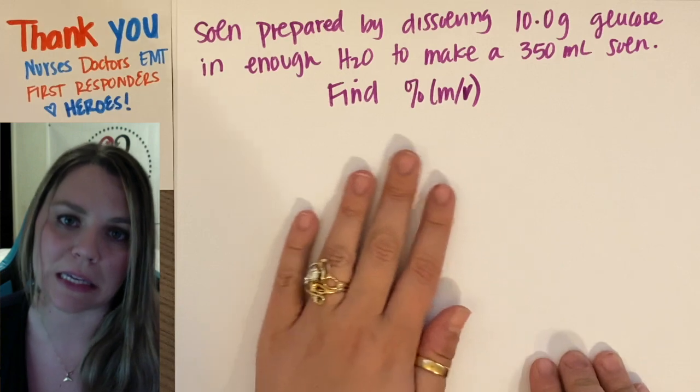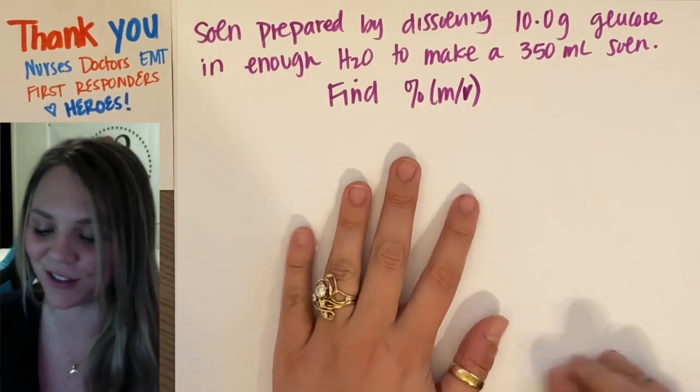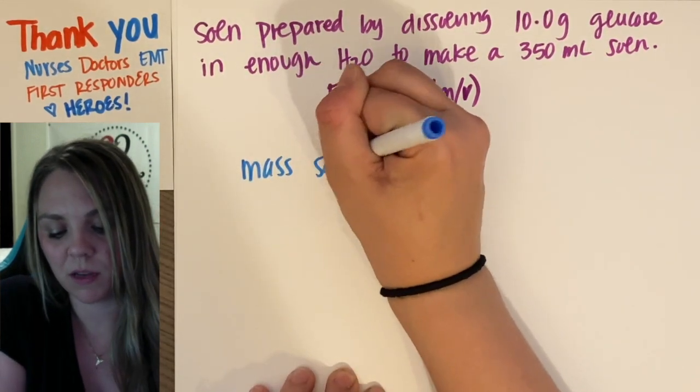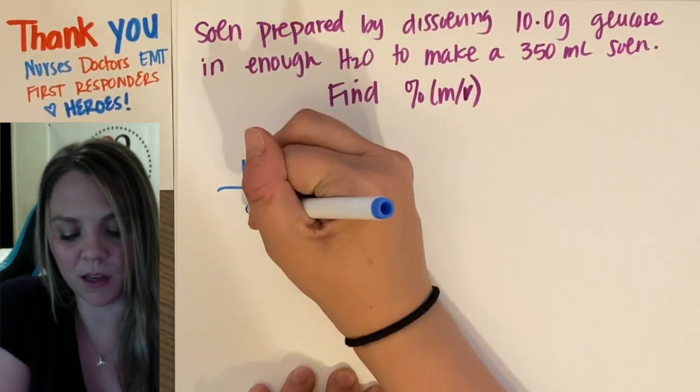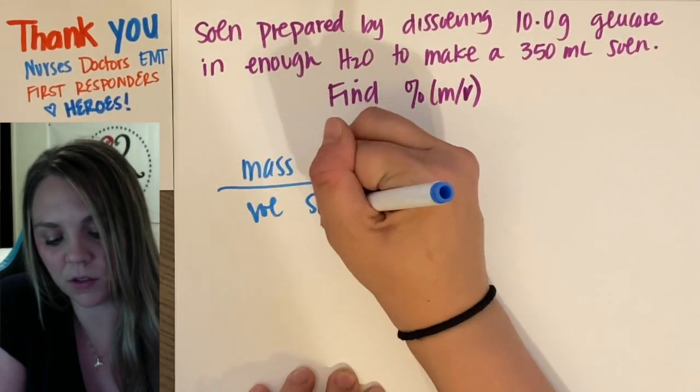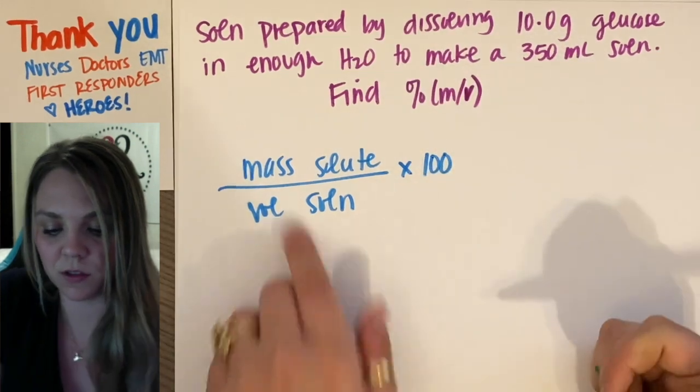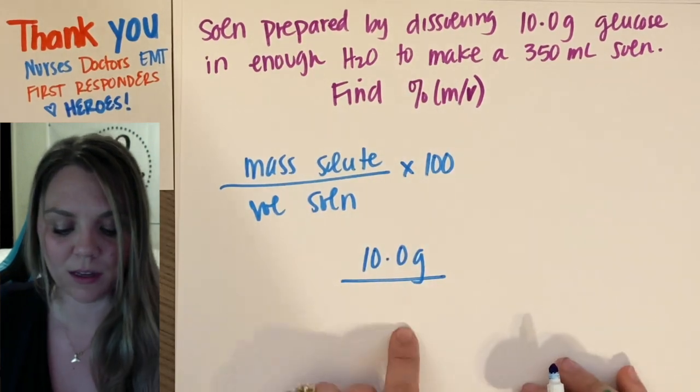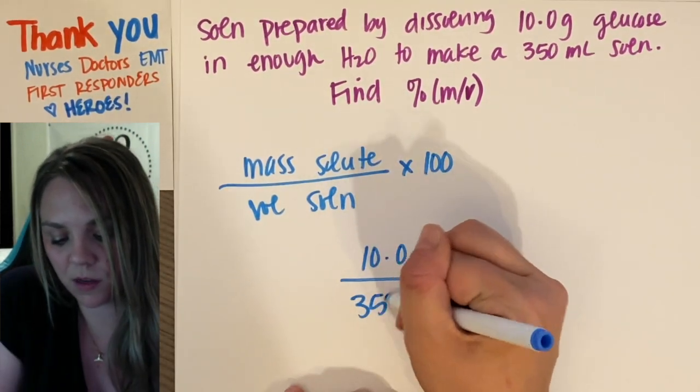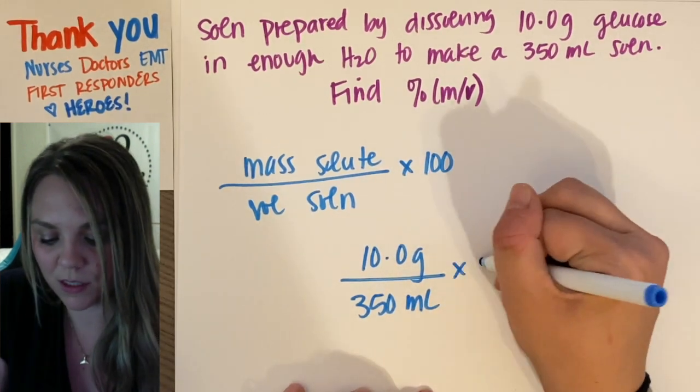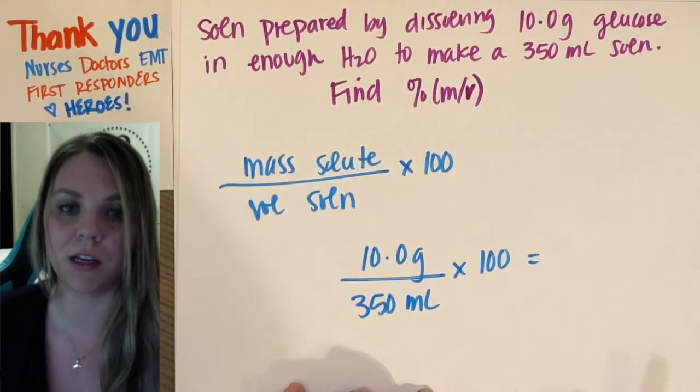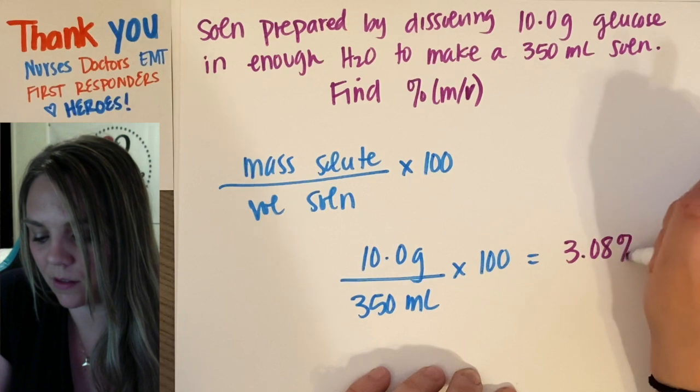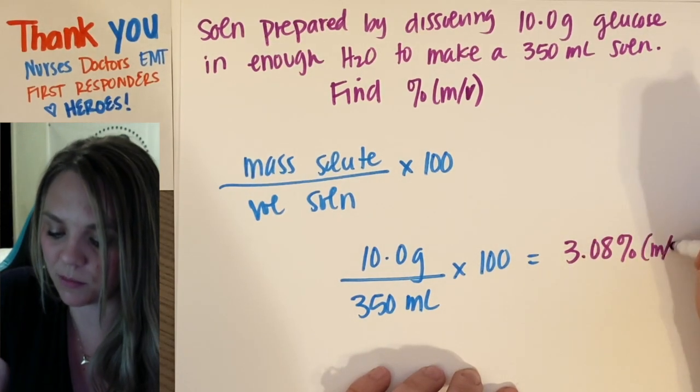So this is literally the easiest possible type of question you could get with mass volume percent, because you need the mass of your solute divided by the volume of your solution times 100. So the mass of your solute, 10.0 grams of glucose divided by 350 mils of your solution times 100 because it is a percent.